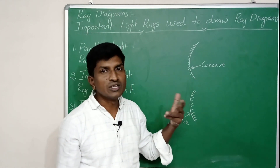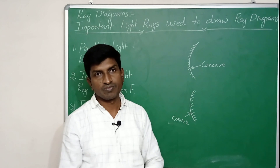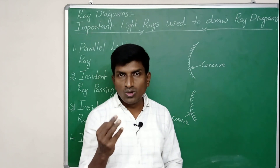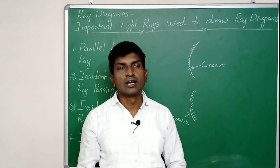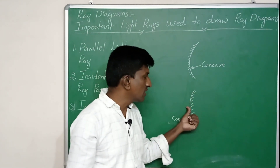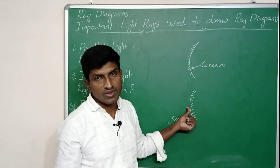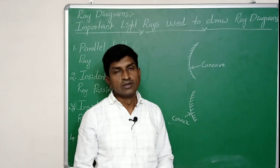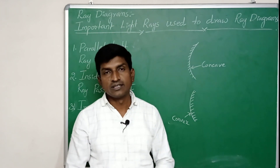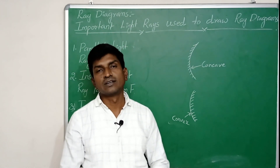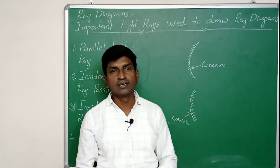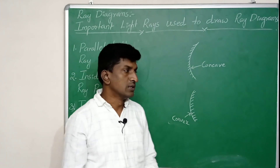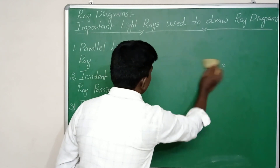So how do we draw these ray diagrams? For ray diagrams, we use at least two light rays which are coming from the object and incident on the mirror. There are a few important light rays used to draw ray diagrams, and we are going to discuss them now.